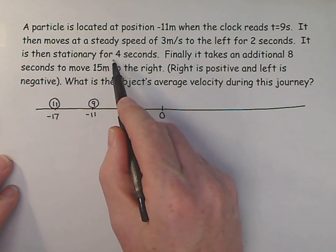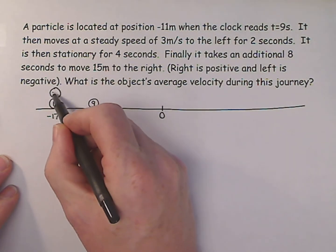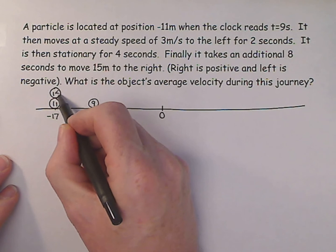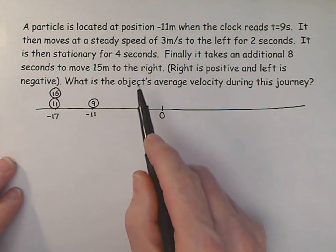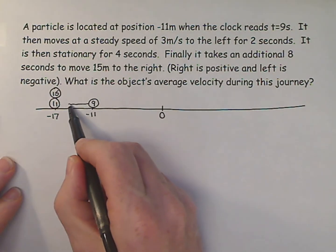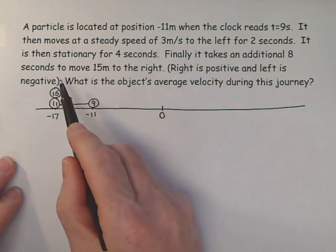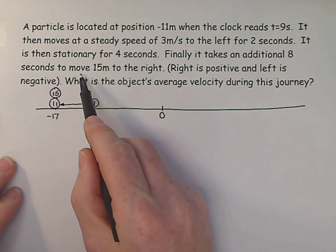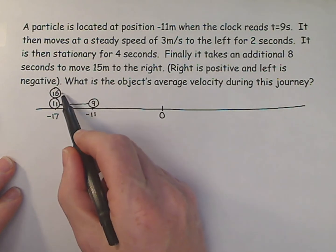It is stationary for 4 seconds. So the clock, while it's stationary here, has gone from 11 to 15 seconds. And the final step, let's put an arrow in here. And the final step is, in an additional 8 seconds, it moves 15 meters to the right.